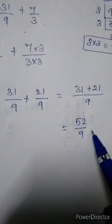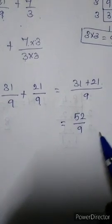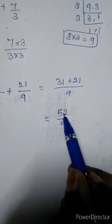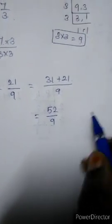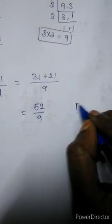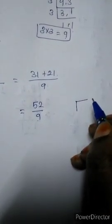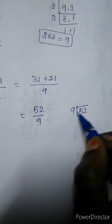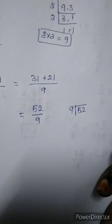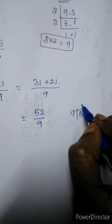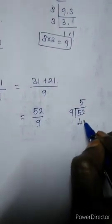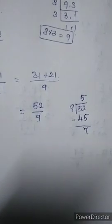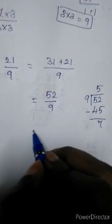After simplifying the final answer should always be expressed in the lowest form. But how can we reduce? Here directly we can't cancel it. So if we are dividing we can get simplest form. 9 into 52. How many times 9 will come? 5 times 9 is 45.